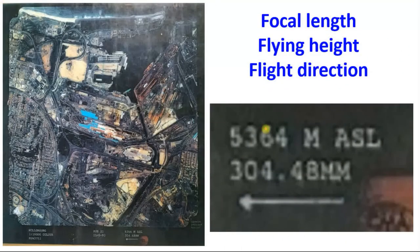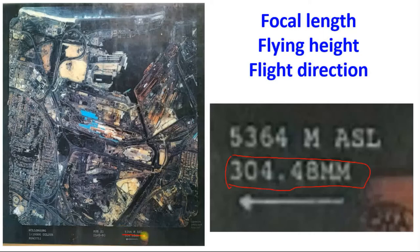Next, focal length. Every photograph has a specific focal length. The focal length of this aerial photograph is given here as 304.48 mm — this is the focal length of the camera used for these photographs. Next, flying height: 5364 meters above sea level. This is the flying height of the camera, or the height of the exposure station.